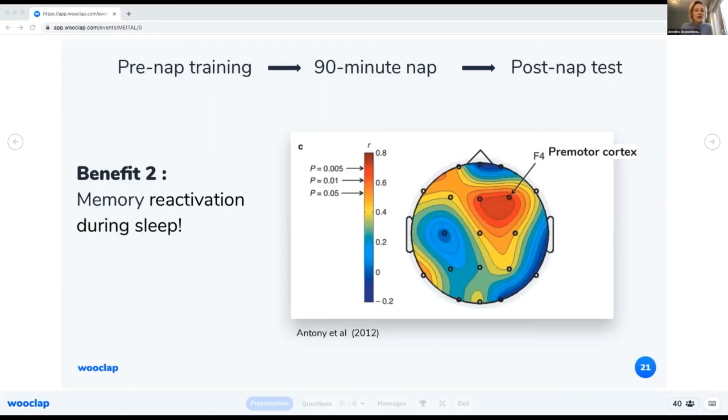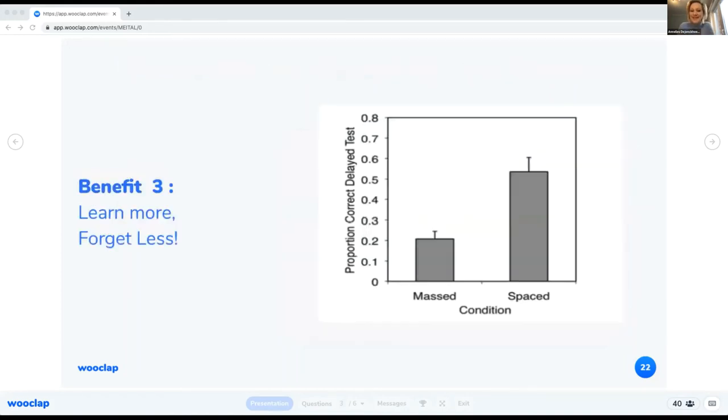And in this experiment on the slide by Anthony and others in 2012, two groups of students were told to learn to play a piano melody with the left hand. One group took a nap, the other one did not, and they both took a test afterwards. And of course no surprises here, they performed better than the group that did not take a nap. And what's fascinating is that during their sleep, the sleep spindle values, the brain activity, were largest over the cortical regions contralateral to the hand that was used to perform the melodies.